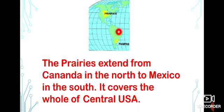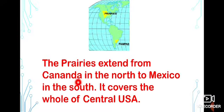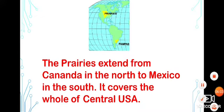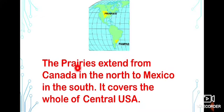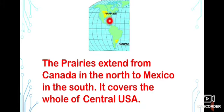We are going to learn about the location of the prairie. The prairie extends from Canada in the North to Mexico in the South. It covers the whole of Central USA. The prairie is situated in North America.